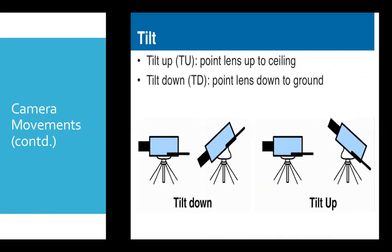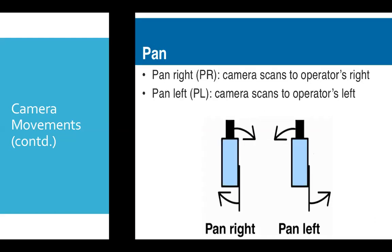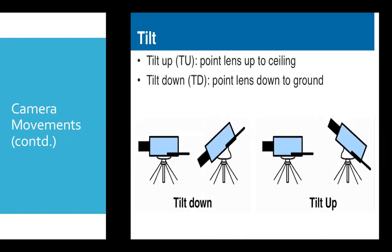Next we will talk about tilt movement. Tilt movement is different from pan movement in that pan movement is horizontal—camera moves right or left—whereas tilt movement is vertical movement. Camera can go up or down.